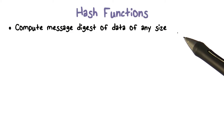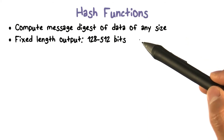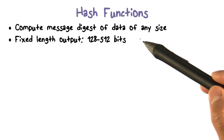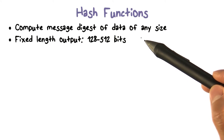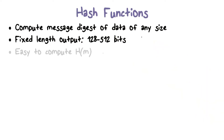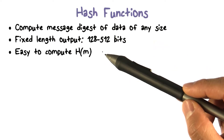A hash function can be applied to a block of data of any size. A hash function produces an output of fixed size, typically in the range of 128 bits to 512 bits. It should be very efficient to compute a hash of an input.